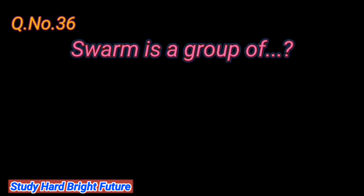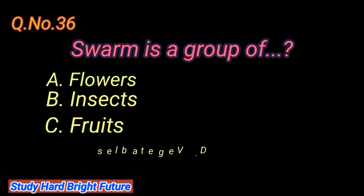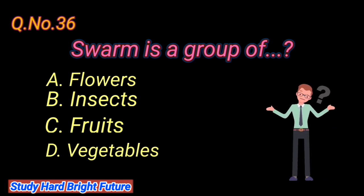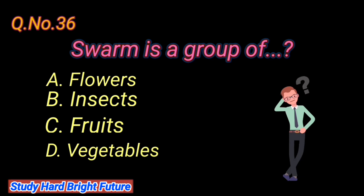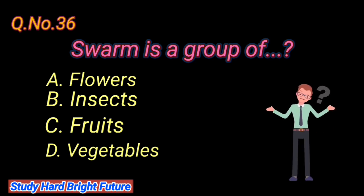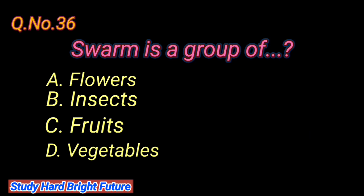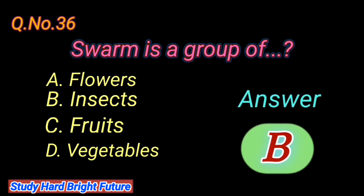Question number 36: Swarm is a group of. A. Flowers, B. Insects, C. Fruits, D. Vegetables. The right answer is B. Insects.